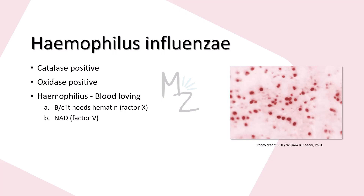Haemophilus influenzae has got two words in it. The first one is Haemophilus, which means blood-loving. It needs two factors for its growth: the first one is hemin, that is Factor X, and the second one is NAD — nicotinamide adenine dinucleotide — that is Factor V. Both these factors are found in blood, which helps this bacterium grow. The second word is influenzae, which is related to infections caused in the upper respiratory tract, like influenza related to flu.